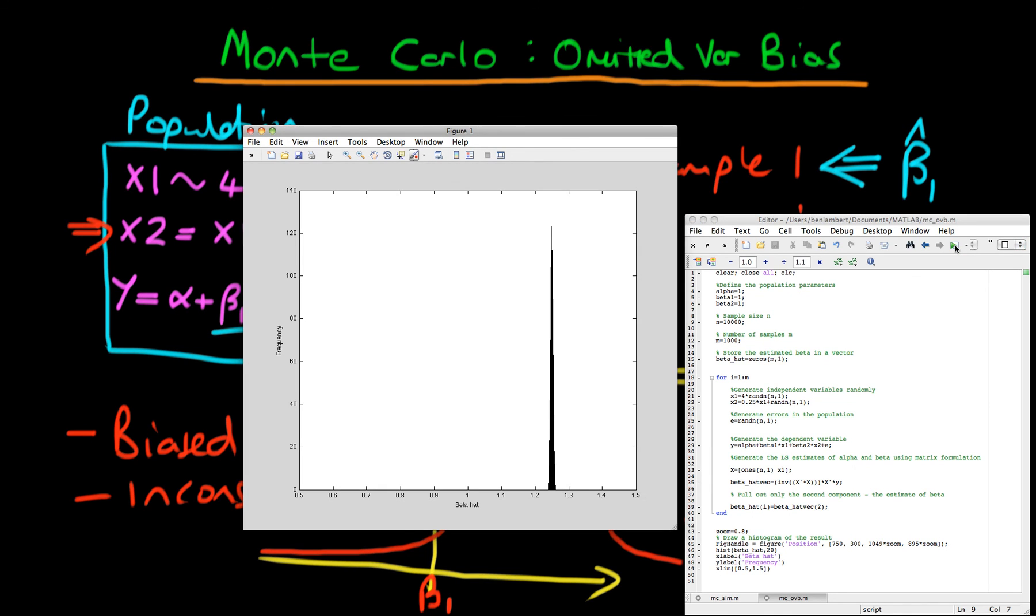So running that, we can see a further narrowing of the sampling distribution. So I hope that this has demonstrated to you that in the circumstance where we omit an important variable from our regression, that means that our OLS estimates or estimators are both biased and inconsistent. And we've demonstrated that using Monte Carlo simulation.